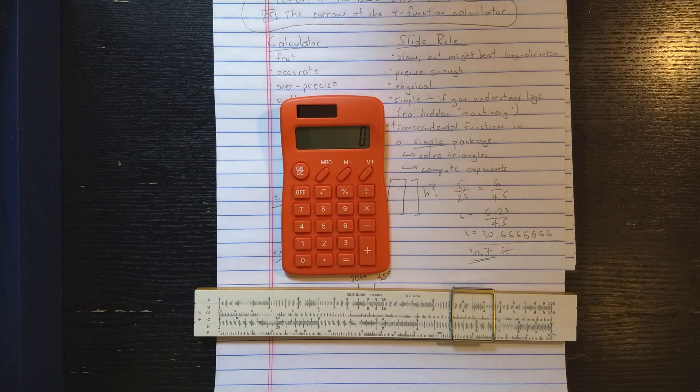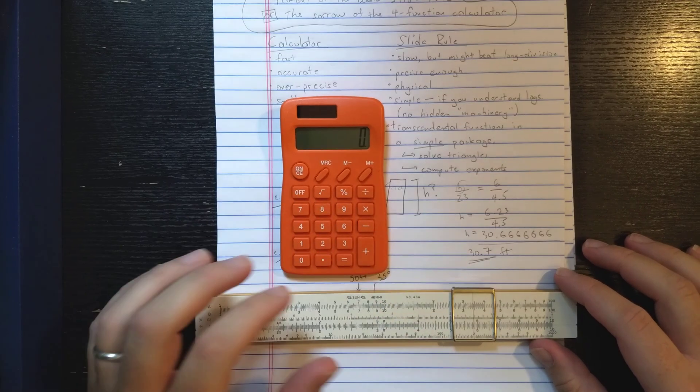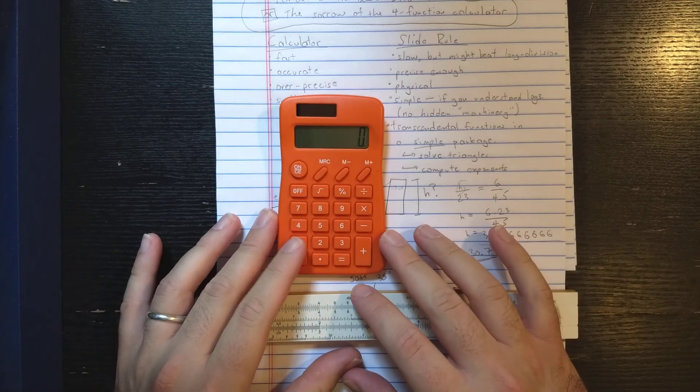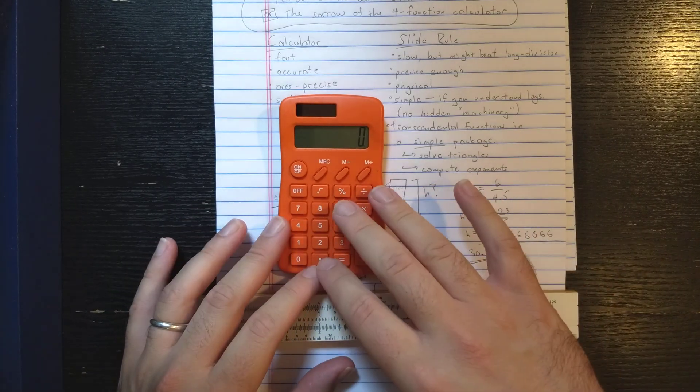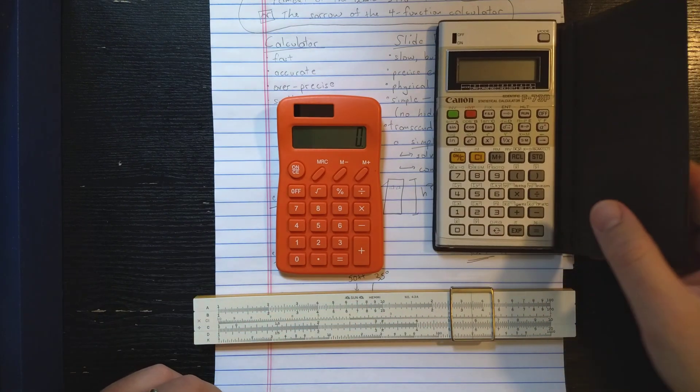Okay, in the 1970s when slide rules finally died and the average person now bought themselves a calculator to do their calculations, we really have the rise of two types of calculators. We have the four-function calculator and the more advanced scientific calculator.